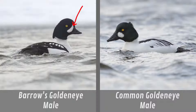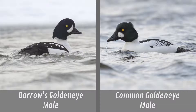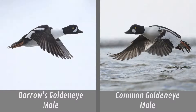The white spot on the head of the Barrow's Goldeneye is very distinctly tear-shaped, whereas the spot of the Common Goldeneye is much more round. The two breeding males are also easy to distinguish in flight. When the wing of the Common Goldeneye is in the down position, a solid white square is easily visible.